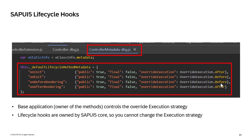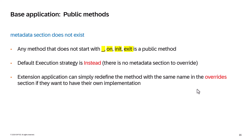For the onBeforeRendering, the extension app runs first, and then the base application runs second, and so on. These lifecycle hooks are owned by the SAPUI5 core, so you cannot change the execution strategy. The base application, the owner of the methods, controls how the execution strategy works.